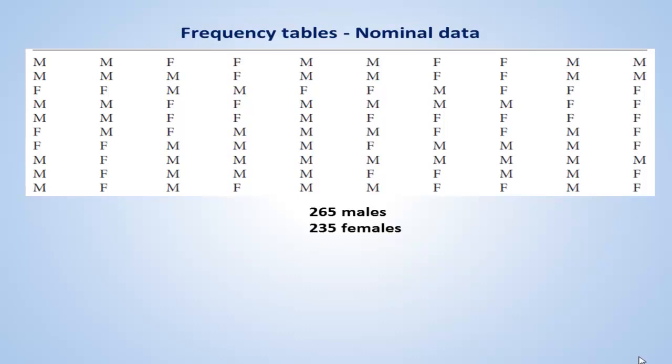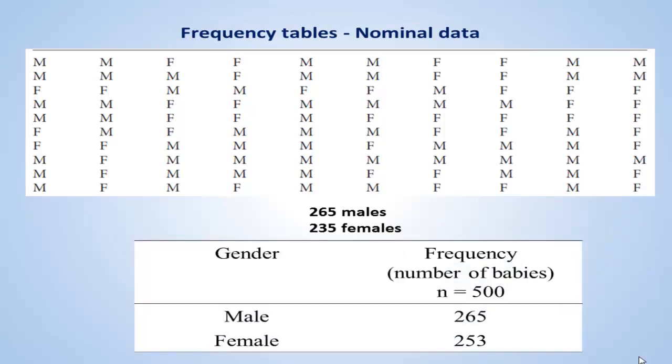We can express this information in more conventional form of a frequency table, as in this one. The label at the top of the first left-hand column indicates the variable being described in the table. The remainder of the first column is a list of categories for this variable.